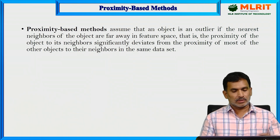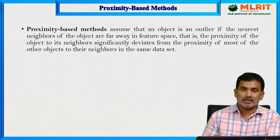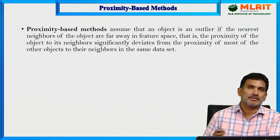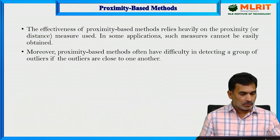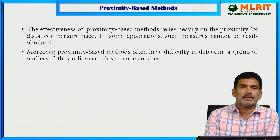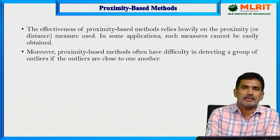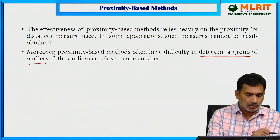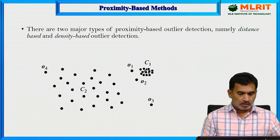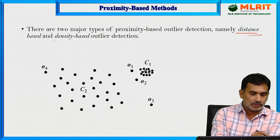The next category is proximity-based methods. These methods assume that an object is an outlier if the nearest neighbors of that object are far away in the feature space — that is, the proximity of the object to its neighbors significantly deviates from that of most other objects in the same dataset. The effectiveness of proximity-based methods relies heavily on the proximity or distance measure used. There are two major types: distance-based and density-based outlier detection.